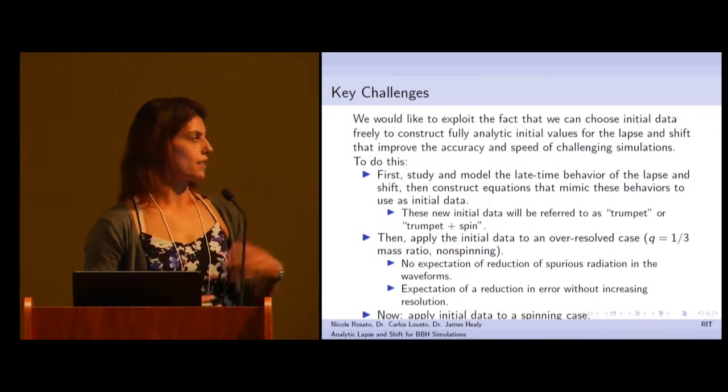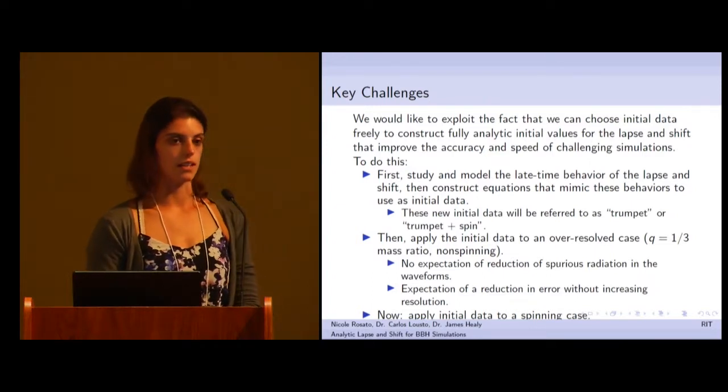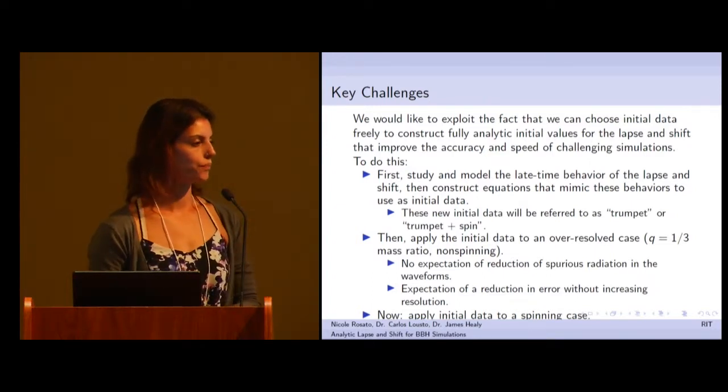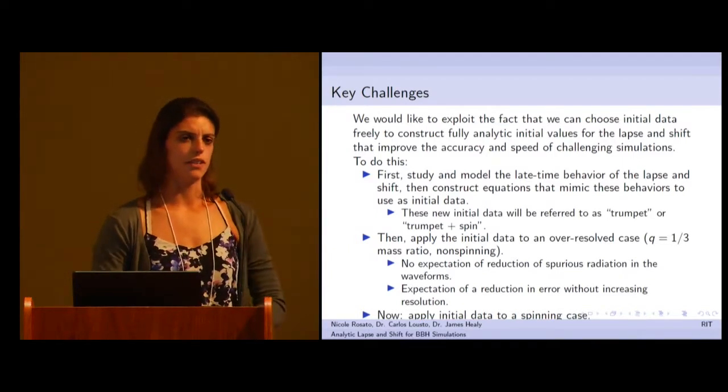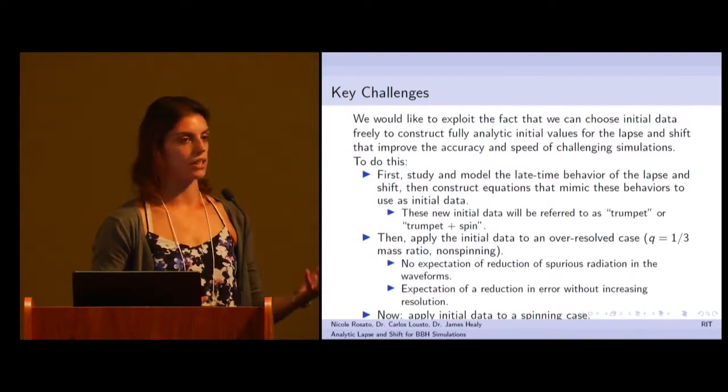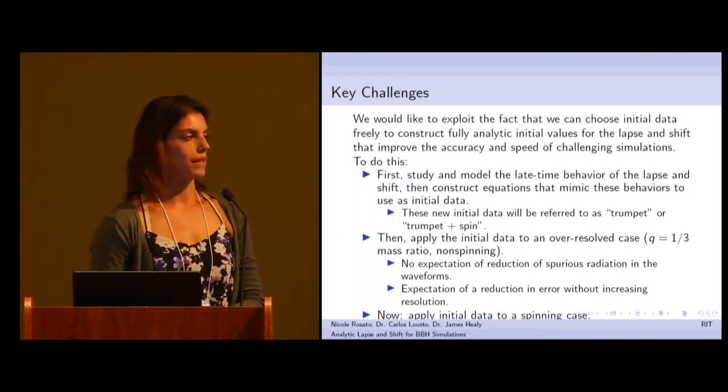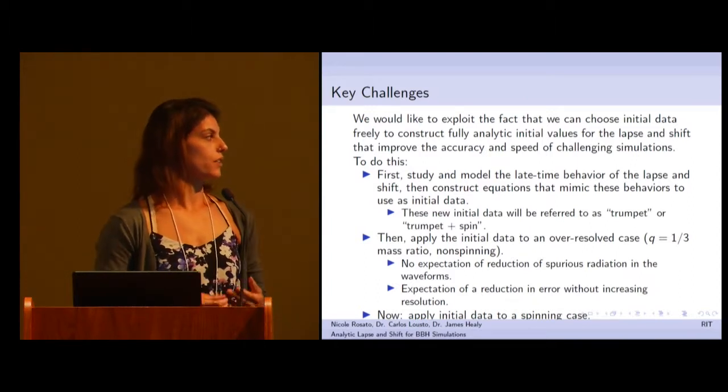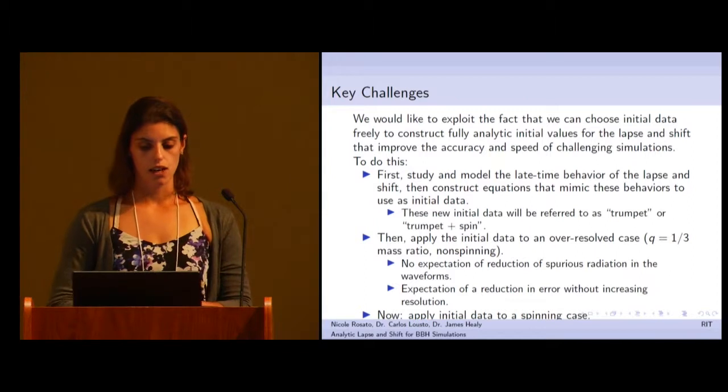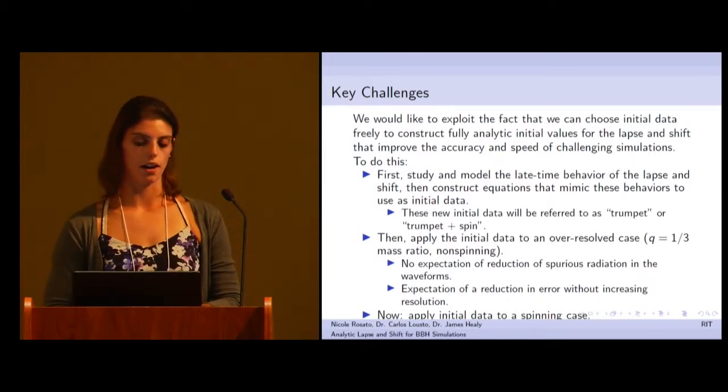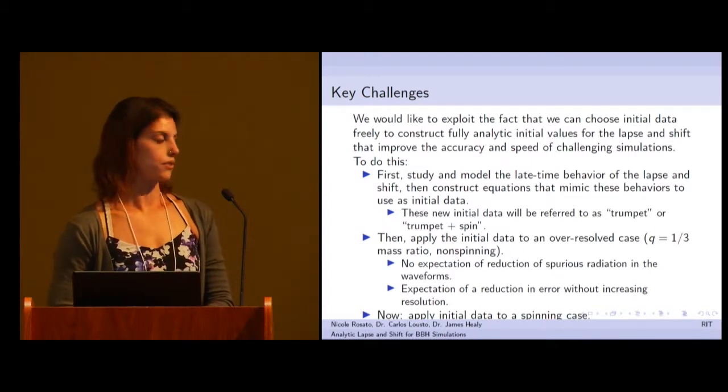Then I applied these initial data to an over-resolved case. We just picked a convenient case that we had a lot of information about. In particular, we chose a 1 to 3 mass ratio case with non-spinning black holes. We didn't expect to see a reduction in junk radiation in the beginning of the waveforms, but we did hope to see a reduction in error. A gain in effective resolution without actually having to increase the resolution.